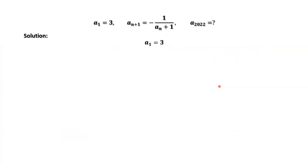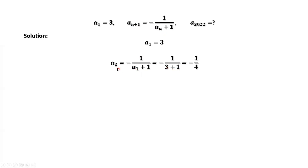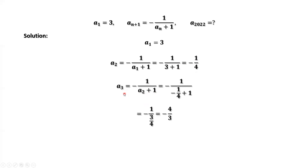a1 equals 3. Using this recursion formula, we can find a2. a2 equals negative 1 over a1 plus 1, so a2 equals negative 1 fourth. Then a3 equals negative 1 over a2 plus 1, where a2 equals negative 1 fourth. Simplifying, we have a3 equals negative 4 over 3.